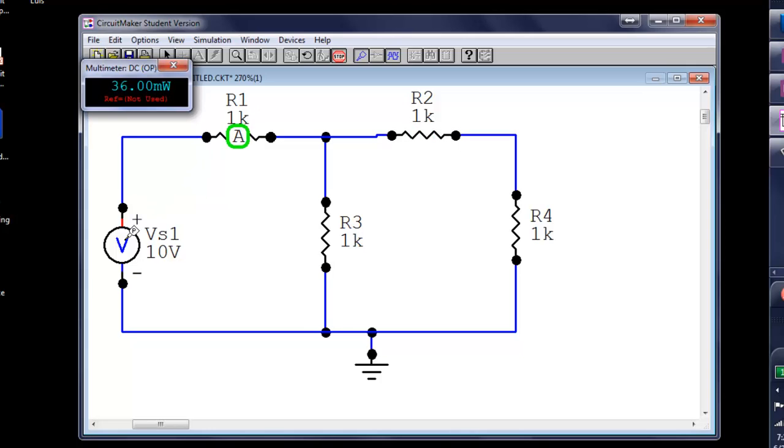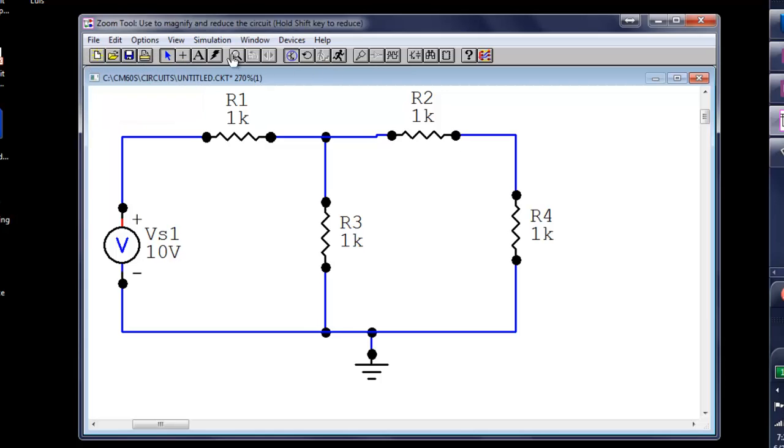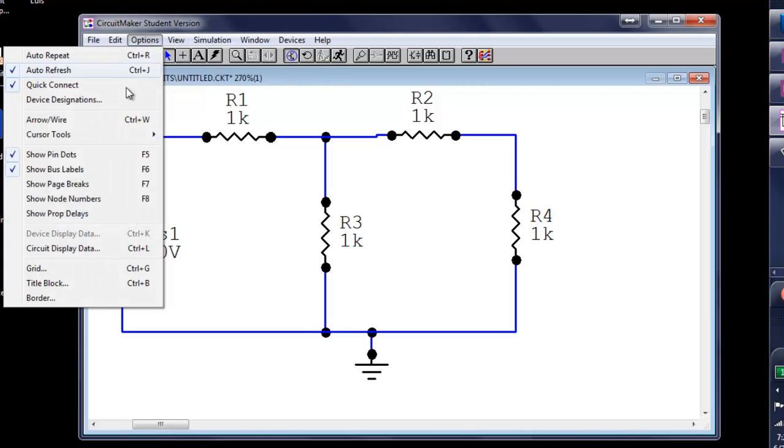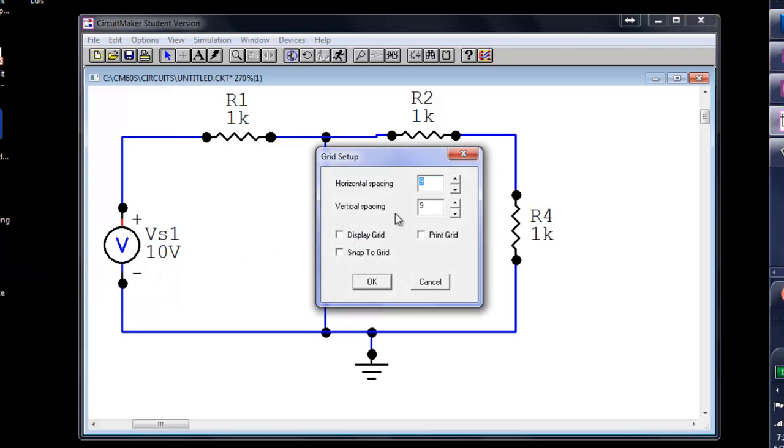Before we leave for the day, let me tell you that normally I prefer to use a grid to keep things aligned. This way. At the very beginning, we click on Options and select Grid or just press Ctrl-G.